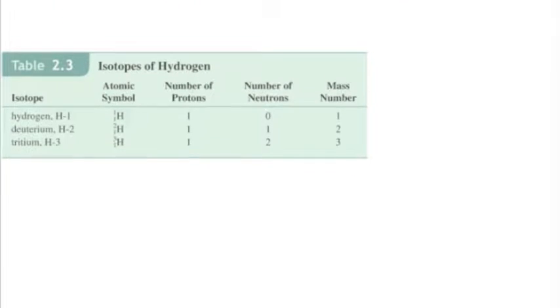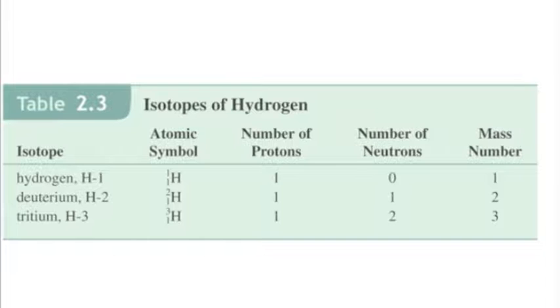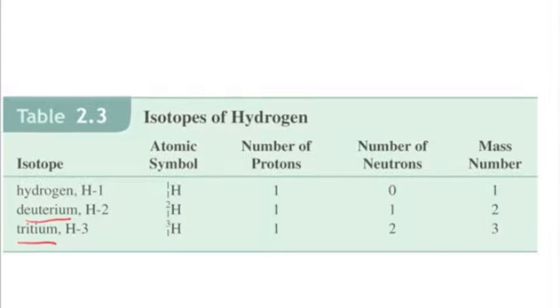One other thing: the isotopes of hydrogen are unique. Normally we name isotopes like neon 20, neon 21 with the elemental name followed by the mass number. Hydrogen is unique in that the isotopes actually have names. Hydrogen 1 is just called hydrogen, but hydrogen 2 is also referred to as deuterium, and hydrogen 3 is also referred to as tritium. If you see those words deuterium or tritium, you need to know they are different isotopes of hydrogen.